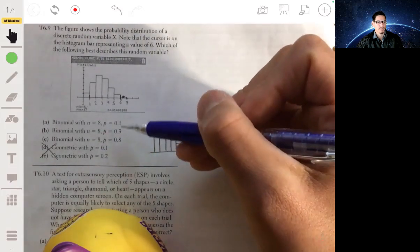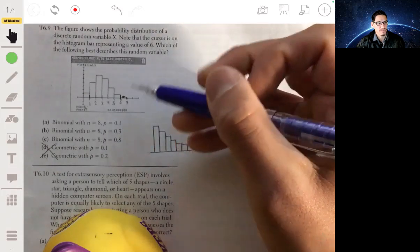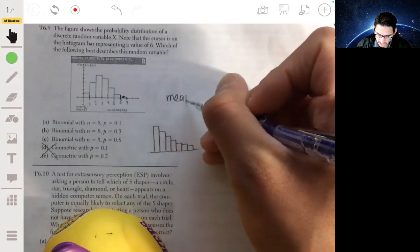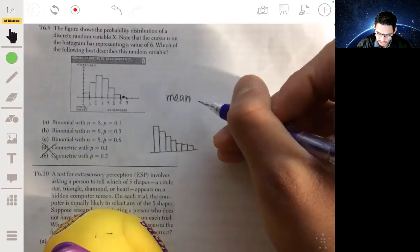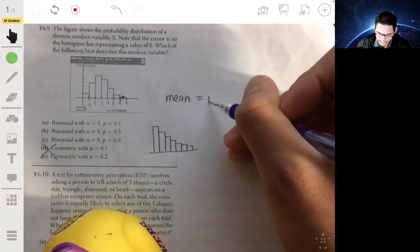So what we can essentially figure out from here is what the mean of this distribution is. The mean of a binomial random variable will be n times p.